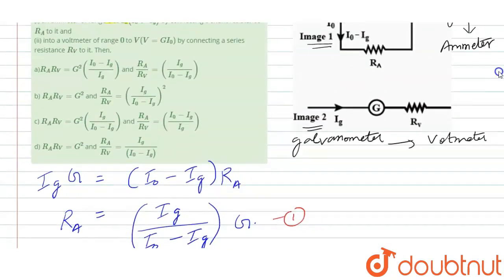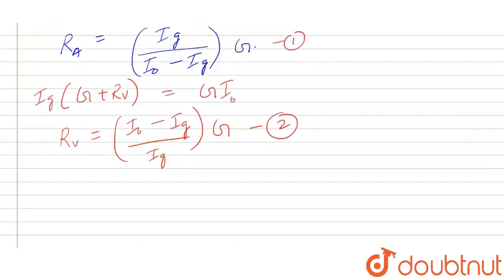According to the options, we need to find out what is RA times RV. So first multiply RA times RV and find out the relation. RA times RV is equal to, that is nothing but multiplying 1 into 2. So if I multiply that, I can see that G and G is getting, you will get G square. So what about IG upon I0 minus IG and I0 minus IG upon IG? Both these terms will get cancelled out. So it is only G square. RA times RV is G square. This implies RA times RV is equal to G square.